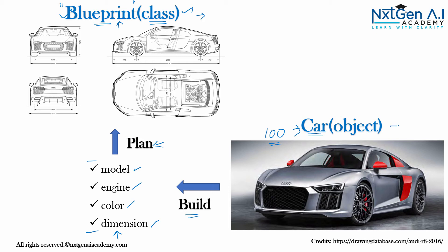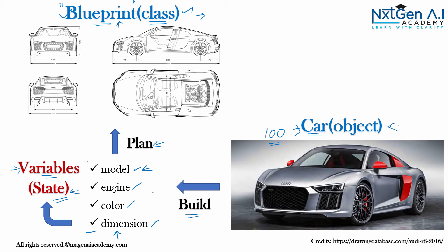Let's go back to the object again. What is an object? From the object we get parameters, and those are technically called variables. Variables can also be called state. For example, we will have different variants of models, engines may be of different types, and color can change. So all these values fall under variables, which is also called state.